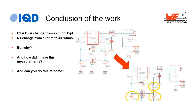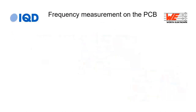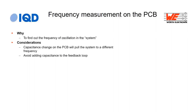Of course, what you want to know is why those changes are needed and how I made the measurements — and whether you could do this yourself. The first measurement is frequency on the PCB. Obviously we need to know how the crystal is running, so we measure the frequency while it's live on the PCB.